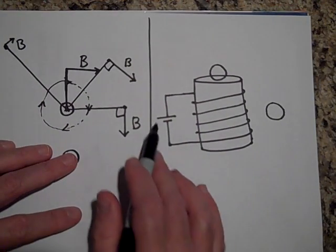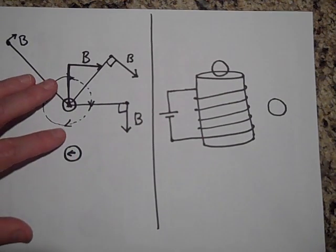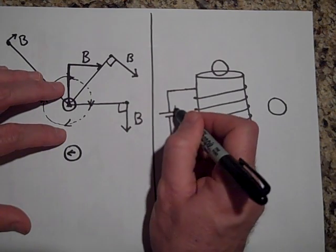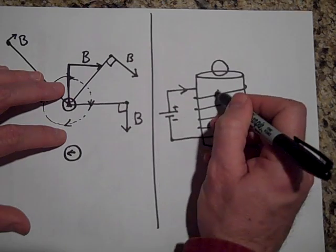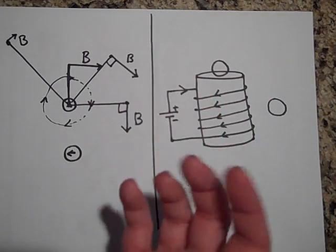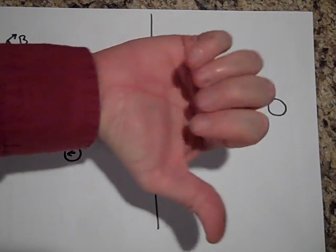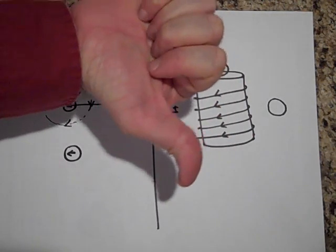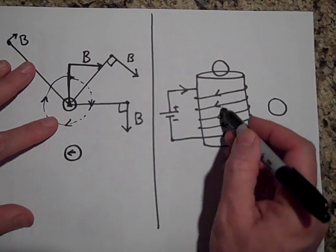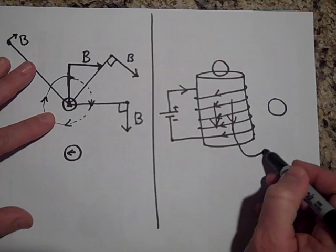All right, here's a solenoid. I put current in this way. Could you tell me which way these compasses are going to point? Go ahead and pause. Okay, these compasses, let's see, if you have a battery this way, that means it's the positive and the negative. So the current's going this way. So I'm going to use the right-hand rule where you put your hands, your fingers in the direction of the current. And when you do that, the field, your thumb shows you the direction of the magnetic field inside the solenoid.